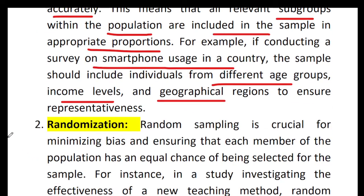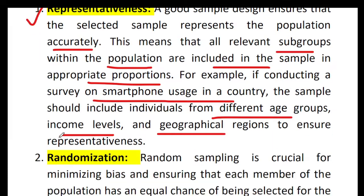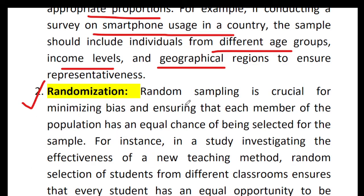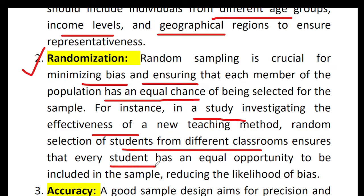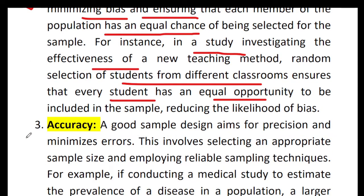The next characteristic is randomization. Random sampling is crucial for minimizing bias and ensuring that each member of the population has an equal chance of being selected for the sample. For example, in a study investigating the effectiveness of a new teaching method, random selection of students from different classrooms ensures that every student has an equal opportunity to be included in the sample, reducing the likelihood of bias.